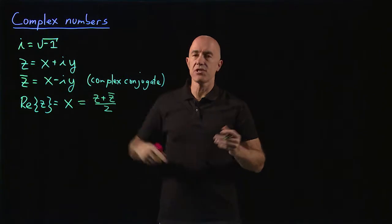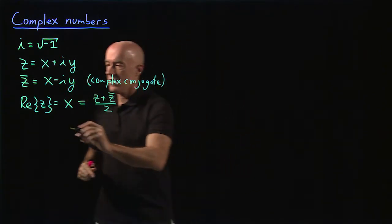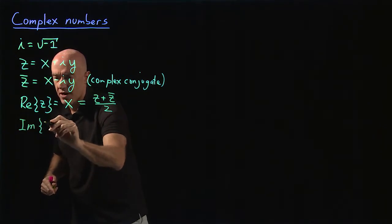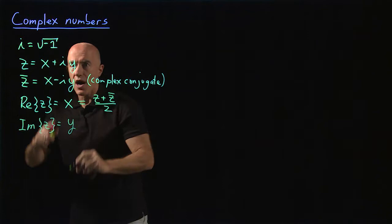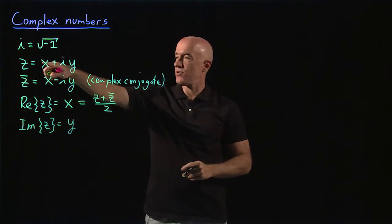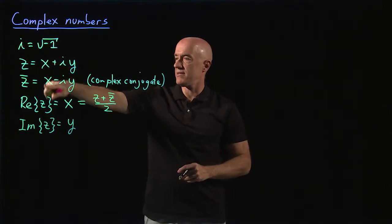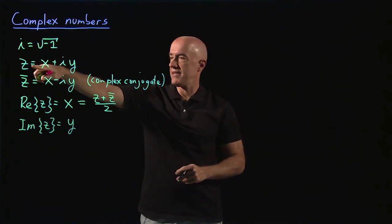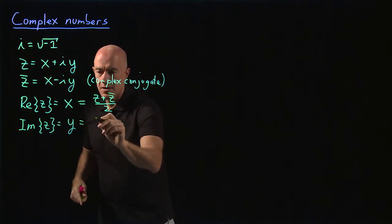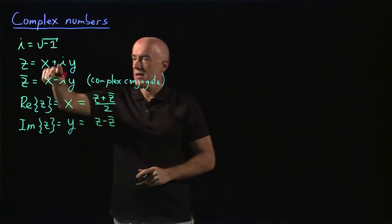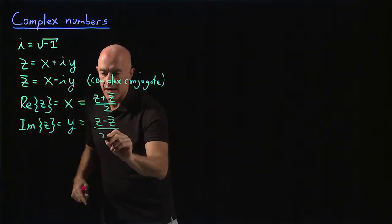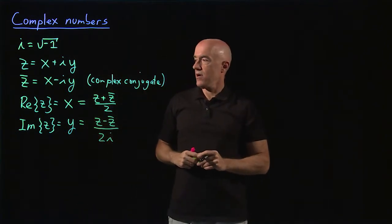The other function is called the imaginary part of z. We write that as Im(z), and that's equal to y — the piece that multiplies i. To get the imaginary part from z and z-bar, take z minus z-bar so the x is eliminated. That gives 2i·y, so you divide by 2i.